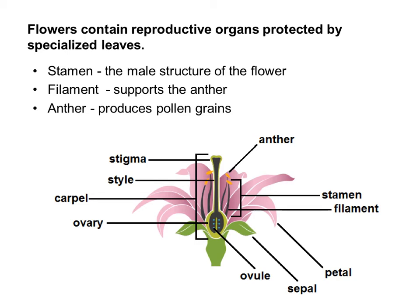The male structure of the flower is the stamen — this tube and the orange part at the top. The two parts are the filament, which holds up the anther, and the anther at the top, which produces pollen grains. Often if you touch the anther, all that pollen will brush off on your finger, because its job is really to spread easily.